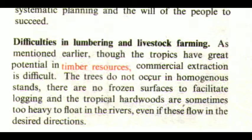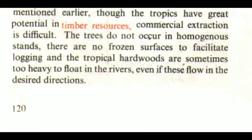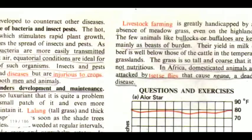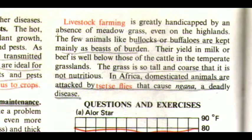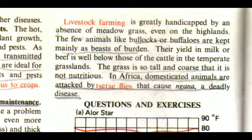The fifth factor is difficulties in lumbering and livestock farming. Though the tropics have great potential in timber resources, commercial extraction is difficult: trees do not occur in homogeneous stands, there are no frozen surfaces to facilitate logging, and tropical hardwoods are sometimes too heavy to float in rivers. Livestock farming is greatly handicapped by an absence of meadow grass. The few animals, like bullocks or buffaloes, are kept mainly as beasts of burden. Their yield in milk or beef is well below that of cattle in temperate grasslands, as the grass is too tall and coarse to be nutritious. In Africa, domesticated animals are attacked by tsetse flies that cause nagana, a deadly disease.